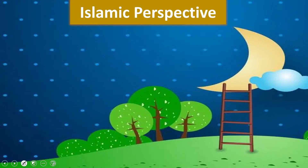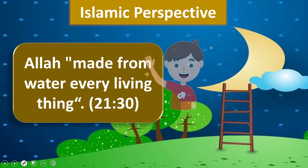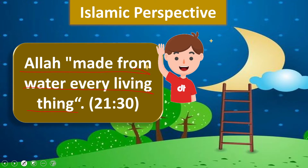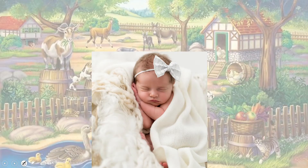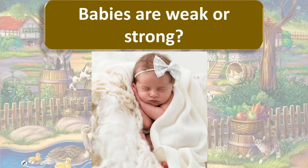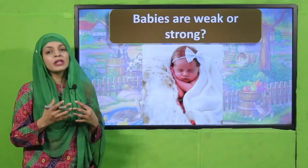Now let's quickly look at the Islamic perspective. Allah says in the Quran: 'Allah made from water every living thing.' Allah taala ne tamam jaandar ko paani se banaya hai. Now for the pre-reading question: babies are weak or strong? Chote chote babies hote hain — woh weak hote hain, kamzor hote hain. Apne aap chal nahin sakte, apne aap kha nahin sakte. So they are weak.